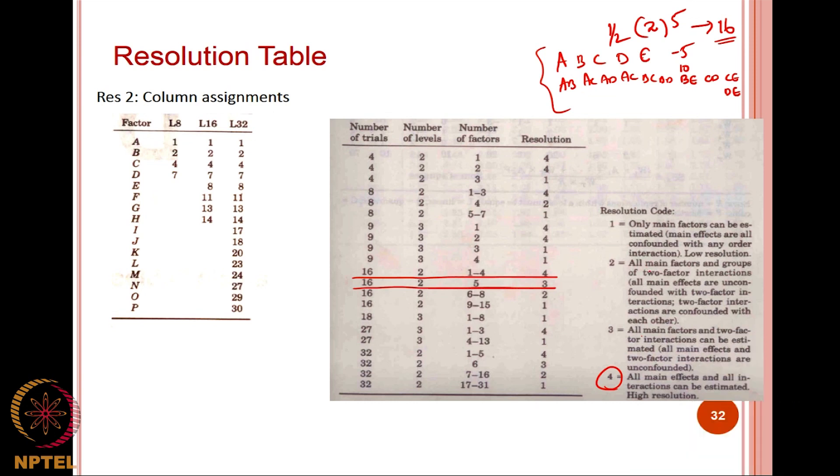What is level 2? All main factors and groups of two factor interactions. When you say groups of two factors, all main effects are unconfounded with two factor interactions, two factor interactions could be confounded. This is what we saw. The two factor interactions could be confounded whereas, the individual factors are not confounded.